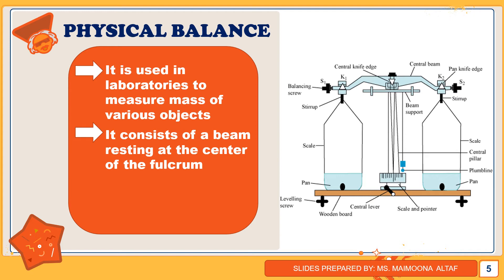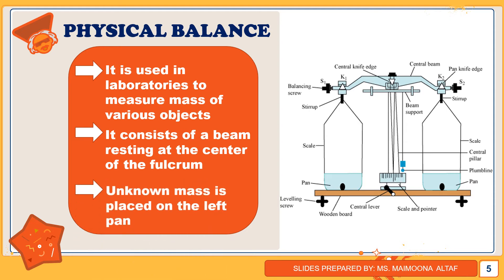The unknown mass is placed in the left pan. It is then balanced with the help of suitable standard masses placed in the right pan. The pointer will come to the zero position, which means that the two masses are equal. This is how we use the physical balance to find the mass of an unknown object.